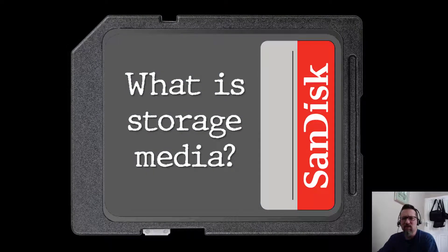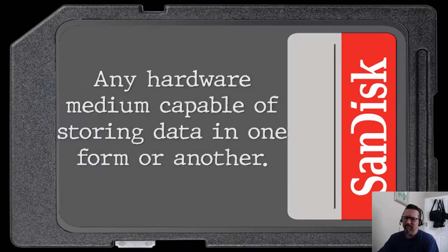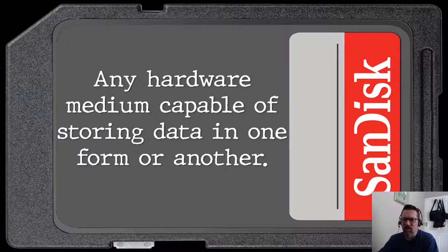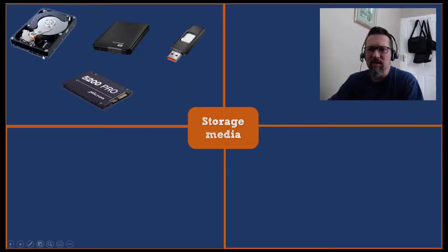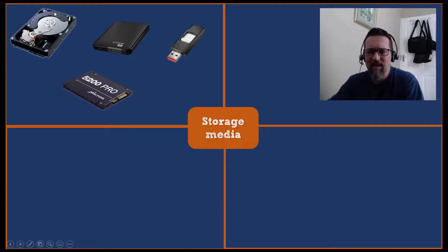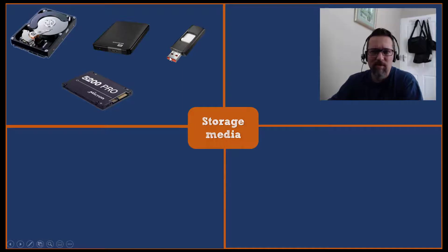So let's look at what kinds of storage media we have. Storage media is any hardware medium capable of storing data in one form or another — any device that can store data is a storage medium or storage device. Common examples include the hard drive — the HDD, hard disk drive — which is an internal hard drive inside the computer. This is an open one; normally they're in an enclosed case. That's an external hard drive; you just plug it in and it runs externally with a cable. Of course, you know your USB memory sticks.